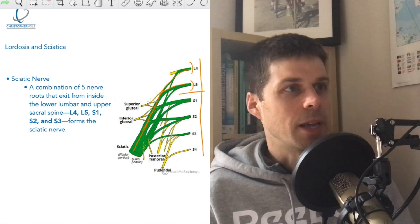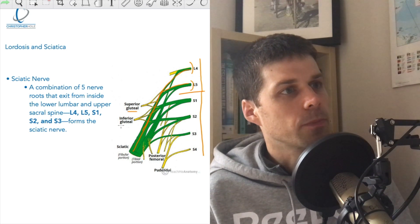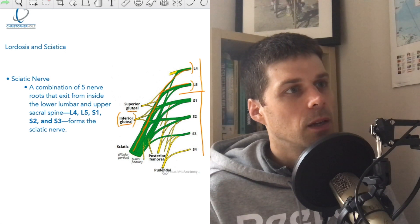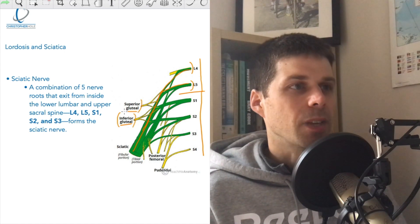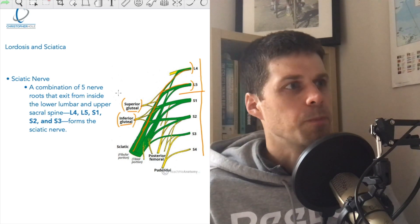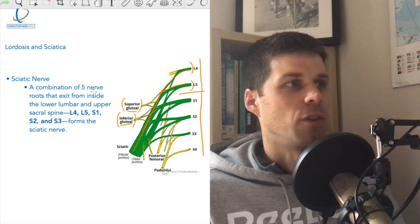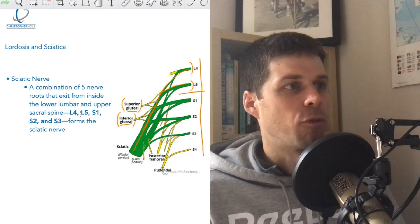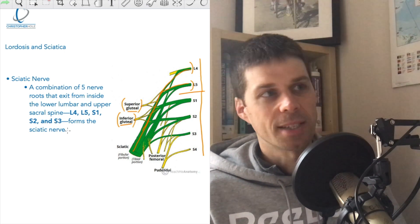What also is happening is you've got the gluteal group are also being irritated or influenced by those nerve roots as well. And as you can see here, a combination of five nerve roots that exit from inside the lower lumbar and upper sacral spine—L4, L5, S1, S2 and S3—forms the sciatic nerve.